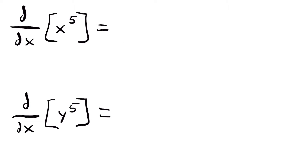Let's start with what we already know. When we take the derivative with respect to x of x to the fifth power, we just use the power rule — we'll have 5 times x to the fourth power. That was easy because we are taking a derivative with respect to a variable that was in the function. But what if we were to take the derivative with respect to x of y to the fifth power? What do we do now?